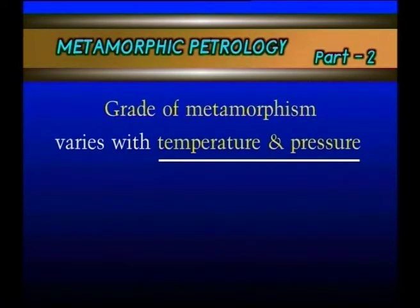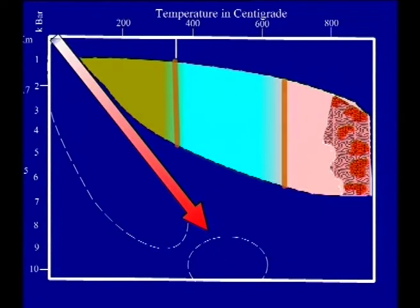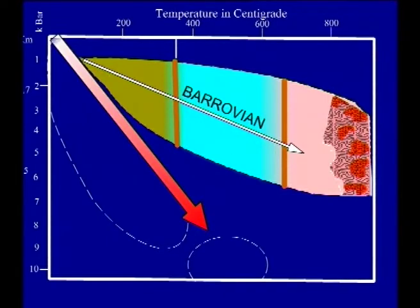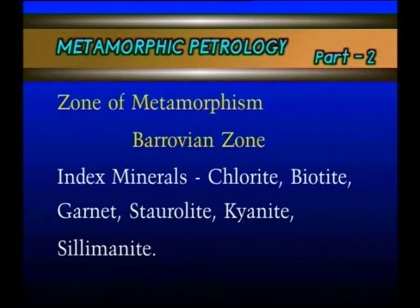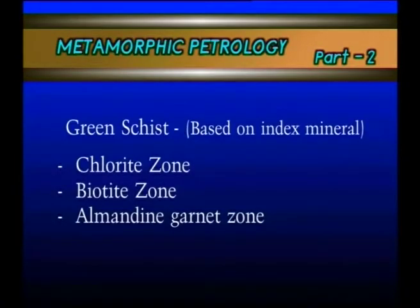Now let us see the zone of metamorphism. The zone of metamorphism refers to what index minerals are present as per the Barovian zones. The index minerals are normally chlorite, biotite, garnet, staurolite, kyanite, and sillimanite. On the basis of index minerals, we can divide the greenschist facies into three zones, each based on one important index mineral — namely, the chlorite zone, biotite zone, and almandine garnet zone.